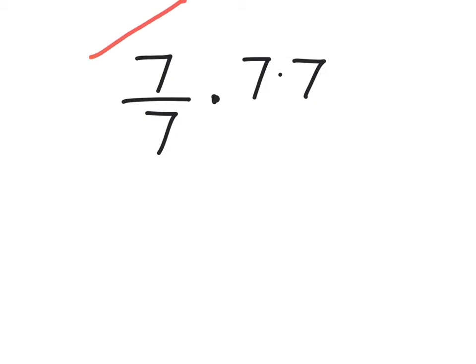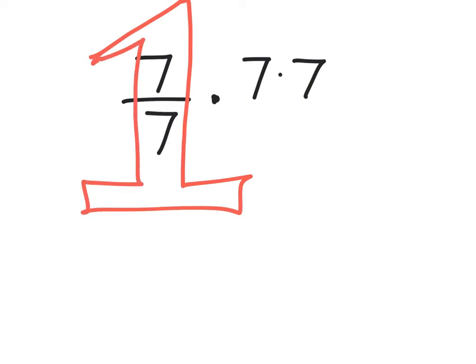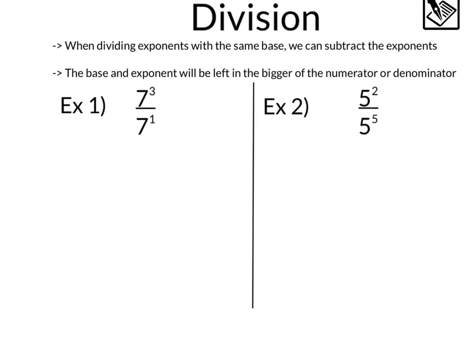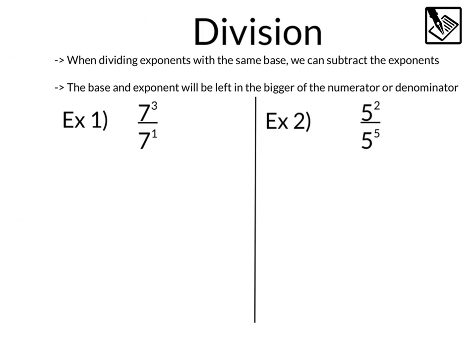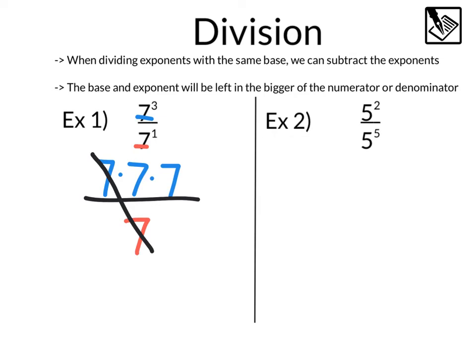This is kind of like that giant one — that seven and that seven becomes a one, leaving us with just those two sevens left over, because when we multiply anything by one, it doesn't really change it. So looking at these examples here, we've got that seven to the third, which is seven times seven times seven, divided by that seven to the first, which is just seven. We can see how if we group one of those sevens together, seven divided by seven is going to cancel out and become a one, leaving us with just these two sevens remaining. That would be a seven squared.